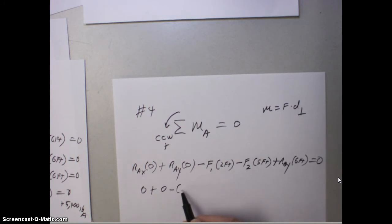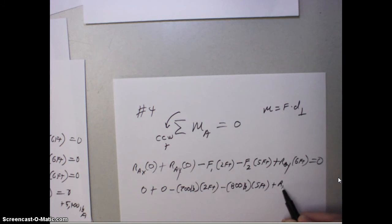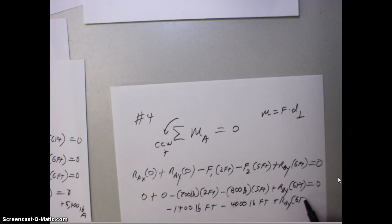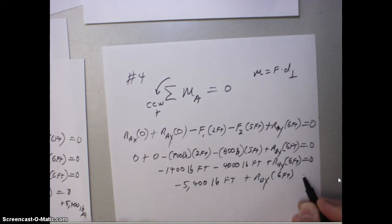So let's go ahead and do some simplifying here. So let's plug in some numbers. That's 700 pounds, and that's 2 feet. That's 800 pounds, and that was 5 feet. This one was RBY. We don't know what that is, but it is 6 feet, and it equal to 0. Let's multiply this out. We get minus 1,400 pounds feet, minus 4,000 pounds feet, plus RBY times 6 feet, equals 0.